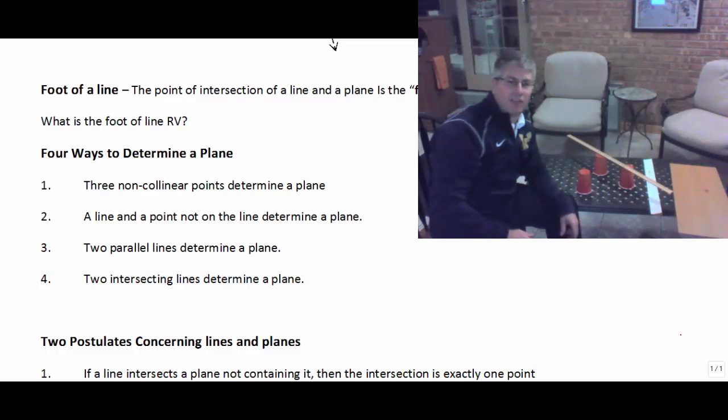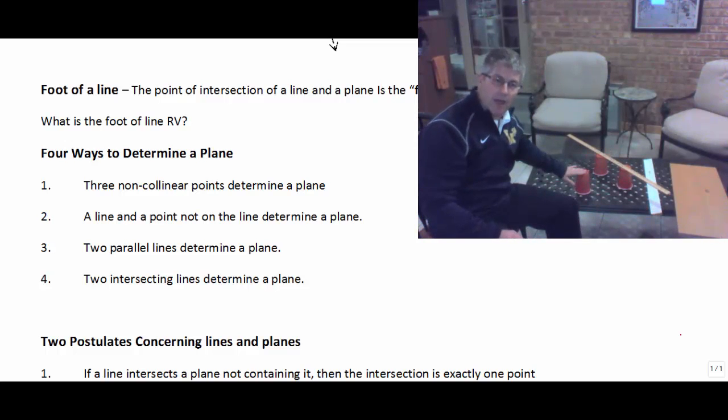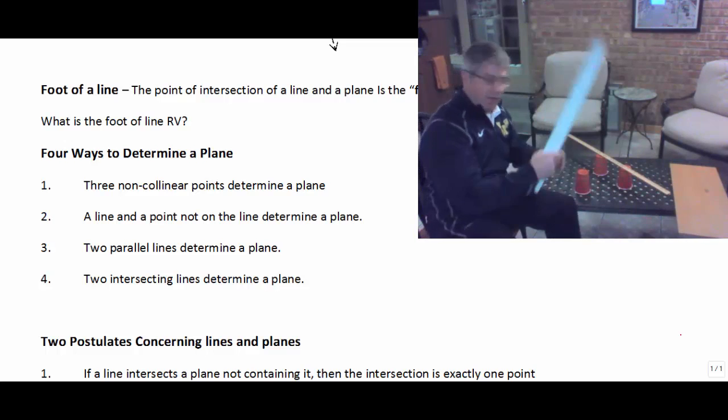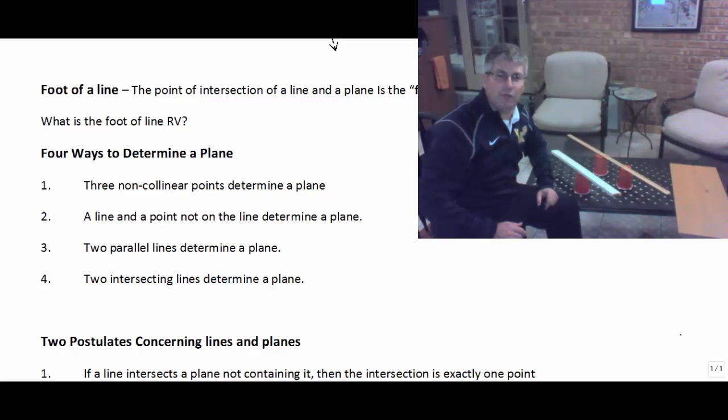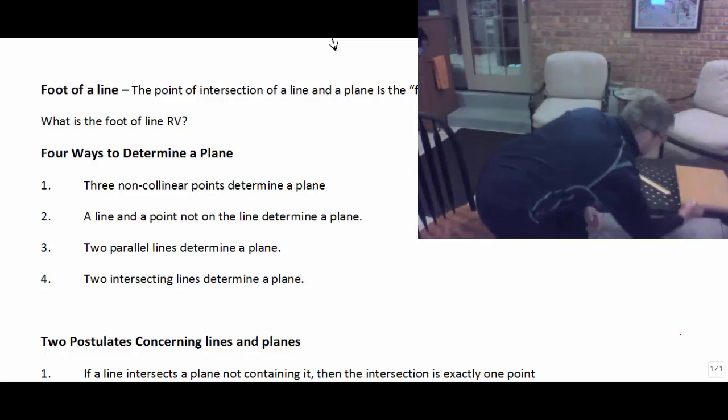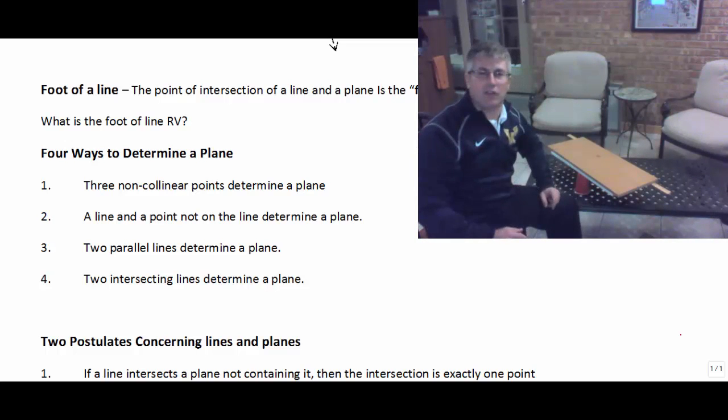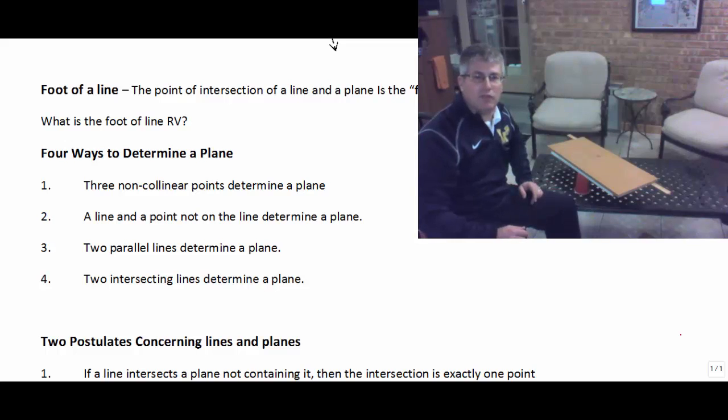Using the parallel postulate, we know that if we have a line and a point not on the line, there's exactly one line through that point parallel to the given line. So I grab my second line here. I now have two parallel lines using the parallel postulate going through my third point. Those two lines are going to determine a plane. I can set a plane on my two parallel lines.